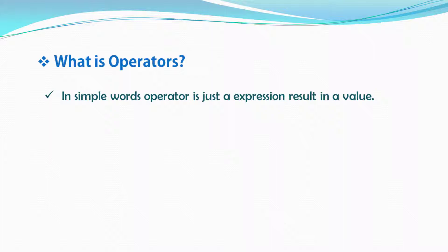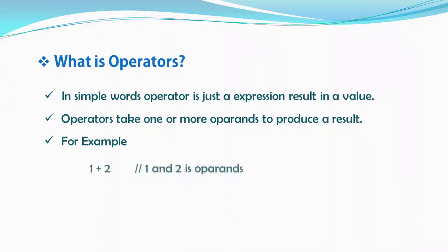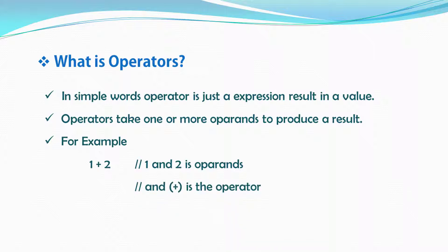Now the question is: what is an operator? In simple words, an operator is just an expression that results in a value. An operator takes one or more operands to produce a result. For example, in the expression one plus two, the numbers one and two are operands and the plus sign is the operator. In programming languages you often see operands called arguments.